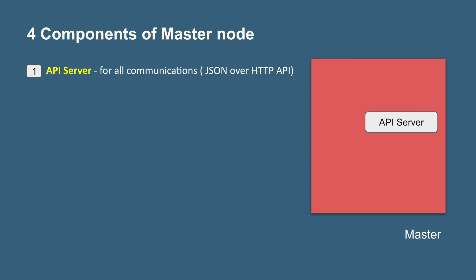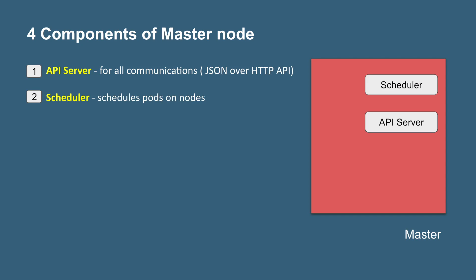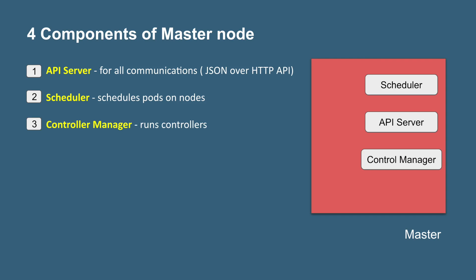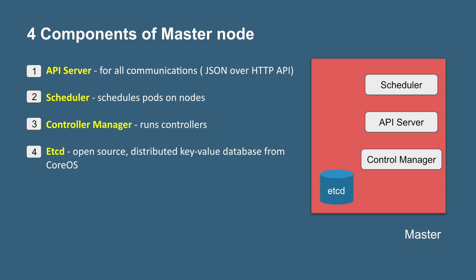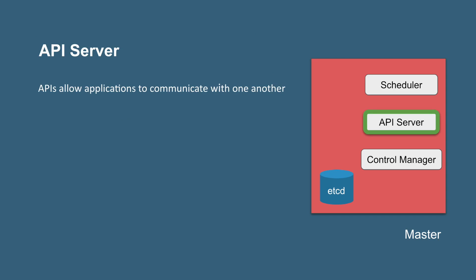The master has four components. The first is the API server, which is responsible for all communications. Then we have the scheduler, which schedules pods on nodes — it can read the configuration from a configuration file and accordingly selects the nodes where pods can be scheduled. Then we have the controller manager, which has some controllers that run monitors and manage activities. And then we have etcd, which is an open source key-value data store where all the cluster data is stored.